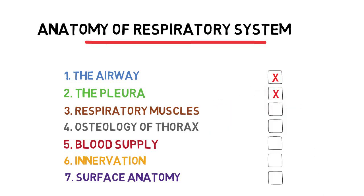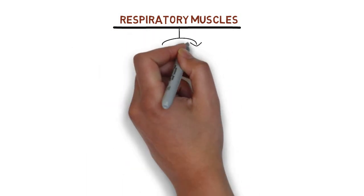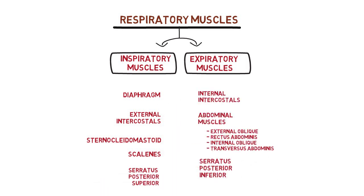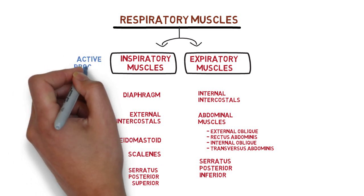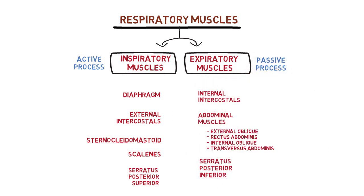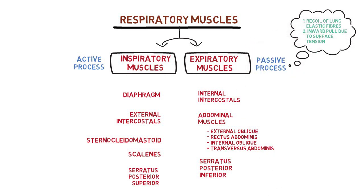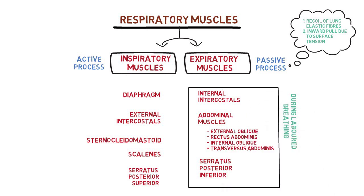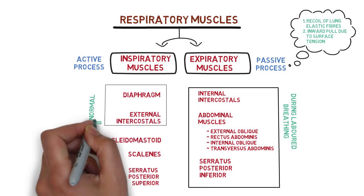The third component is our respiratory muscles. They can be divided into inspiratory and expiratory components. Not all are always in use, for two reasons. Firstly, because the inspiratory process is an active process unlike expiration which is passive. Expiration is mainly passive because the shrinking of the lung is mainly due to the recoil of the lung elastic fibres and inward pull due to surface tension provided by the lung surfactant. Thus, the other expiratory muscles are only used during laboured breathing. Among inspiratory muscles, the only ones used during normal breathing are the diaphragm and the external intercostals, whereas the other muscles are used during laboured breathing.